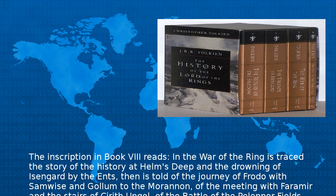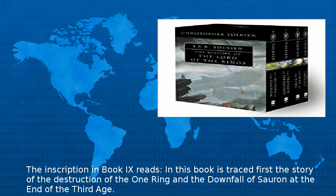The inscription in Book VIII reads: In The War of the Ring is traced the story of the battle at Helm's Deep and the drowning of Isengard by the Ents; then is told of the journey of Frodo with Samwise and Gollum to the Morannon, of the meeting with Faramir and the stairs of Cirith Ungol, of the battle of the Pelennor Fields, and of the coming of Aragorn in the fleet of Umbar.